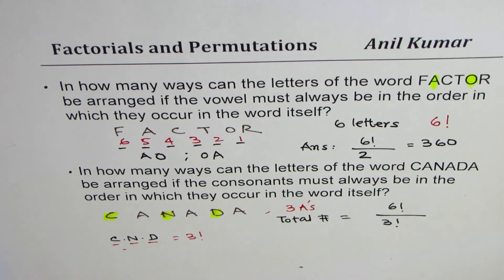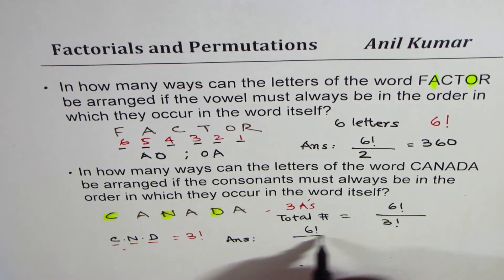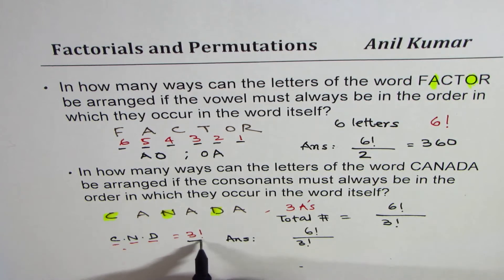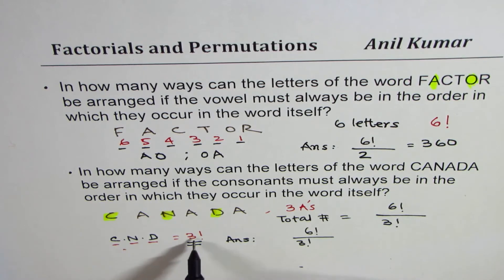So for same order, what do we get? So in this case, our answer will be 6 factorial divided by 3 factorial. These are total number of words divided by the arrangements which you can make with C, N, D. We are interested only in one of these. Out of those 6 arrangements, 3 factorial is 6.